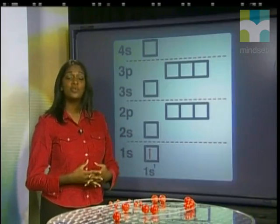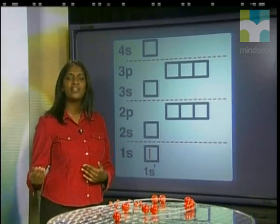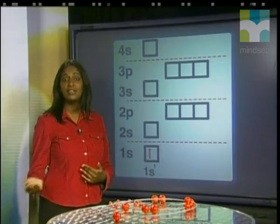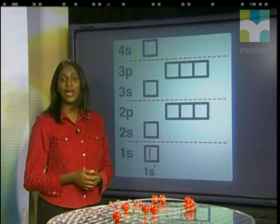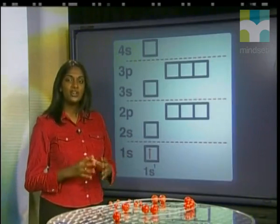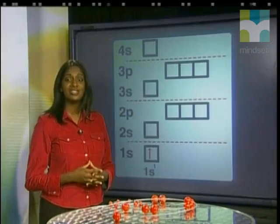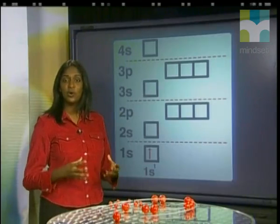When an electron has more energy, it occupies a region of space further away from the nucleus, just like Bohr had predicted. However, the quantum mechanical model does not restrict the electrons to orbits, but to areas of space called orbitals.